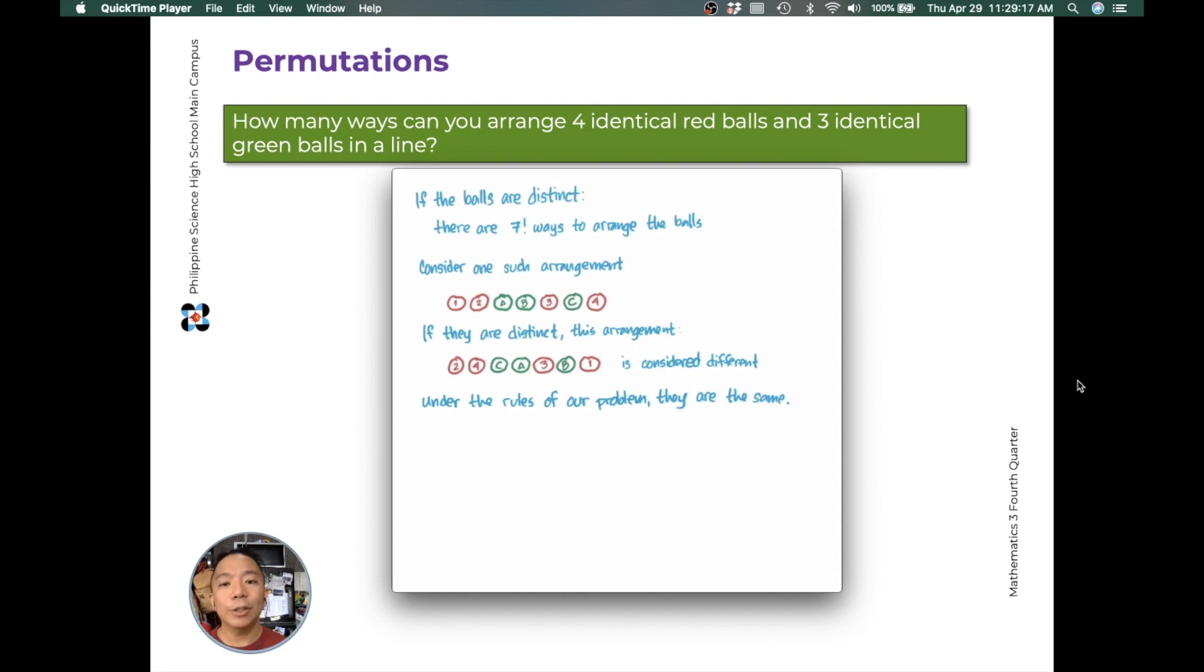Now, since the reds and greens are identical, you'll have to find a way to remove the different permutations of the reds and different permutations of the greens in this same arrangement of red, red, green, green, red, green, red. So, how many ways can you arrange your red balls when they're sequenced like this? In this arrangement, the red balls can be arranged 4 factorial ways. Likewise, our green balls can be arranged 3 factorial ways within the same arrangement of red, red, green, green, red, green, and red.